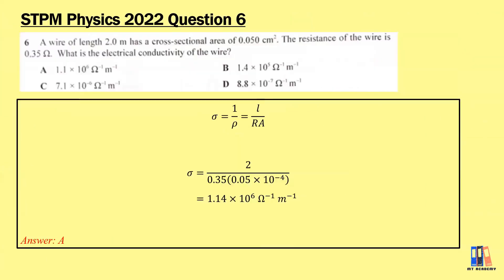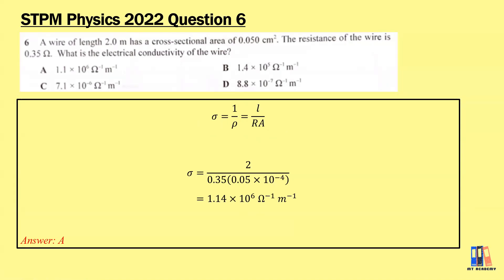The last question is 2022 Question 6. A wire of length 2 m has a cross-sectional area of 0.05 cm² and resistance of 0.35 Ω. What is the electrical conductivity of the wire? Reviewing the given variables — length, area, and resistance — these correspond to the resistivity formula. Since σ = 1/ρ, we have σ = L/(RA). Applying the values, the conductivity is 1.14 × 10⁶ Ω⁻¹m⁻¹. The answer is B.